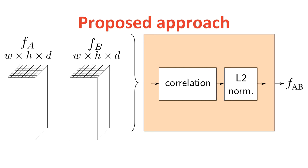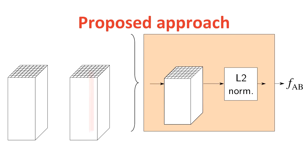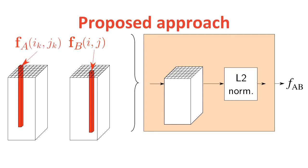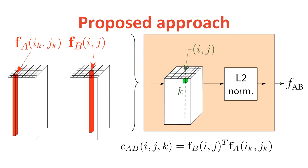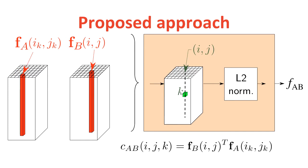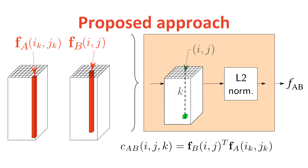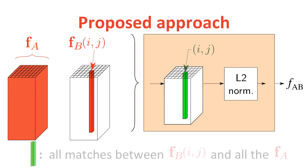Let's see how the correlation tensor is computed. Given the feature B at position IJ and the feature A at position K, the correlation tensor at IJK is just the dot product between these two vectors. If we keep feature B fixed and change feature A, the computed matching scores are stored along the same column vector of the correlation tensor. The full column vector, shown here in green, contains the matches between this particular FB and all the FA.